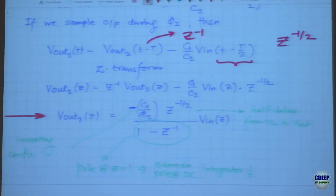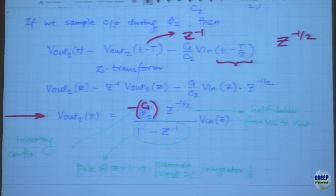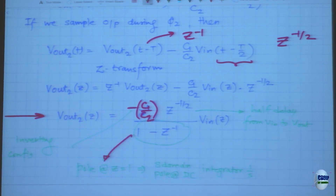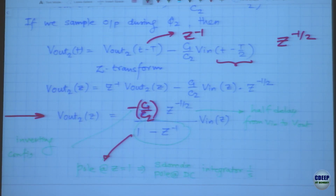The transfer function expression has an inverting sign. C1/C2 represents the integration time constant. The term (1 minus Z^(-1)) represents the integrator operation, and Z^(-1/2) represents the half-cycle delay — because we sampled the input in the previous cycle and the output is available in the next cycle. This is the way to get an integrator.